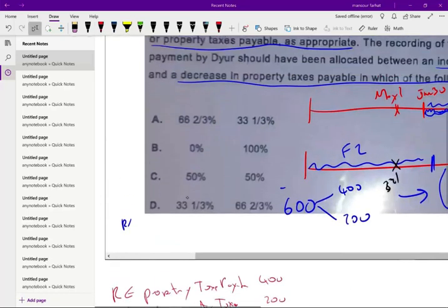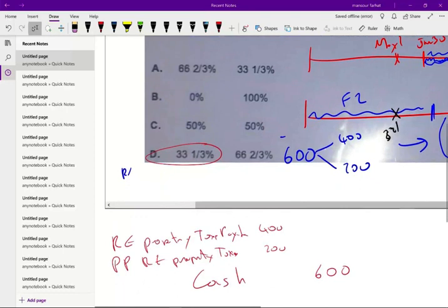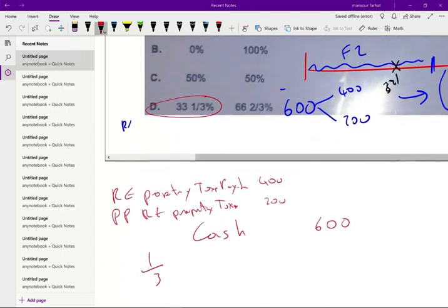Therefore, what's going to happen is the answer is we're going to increase prepaid by 33 and one third, which is one third. And the other one is two third. And we're going to reduce, so the payable is reduced by two third and the property is reduced by one third.